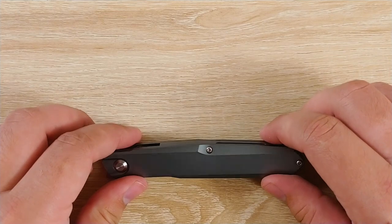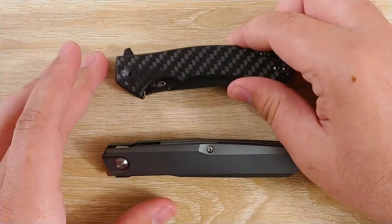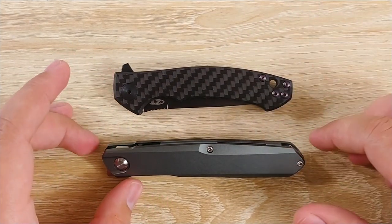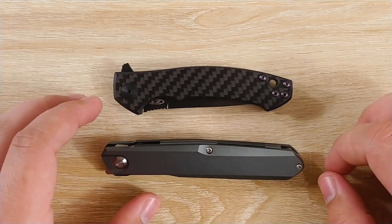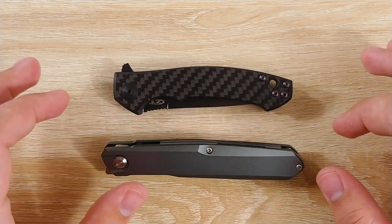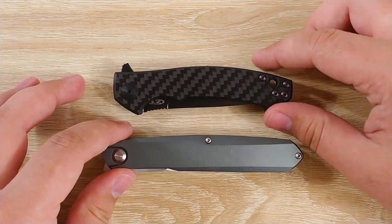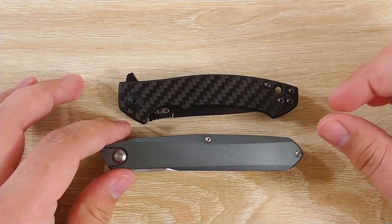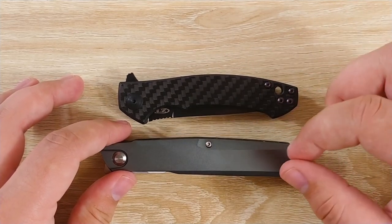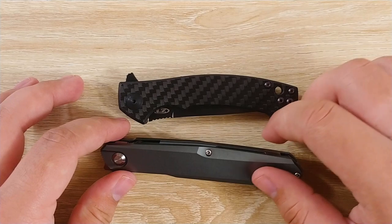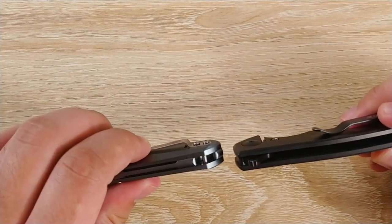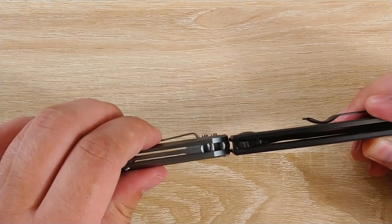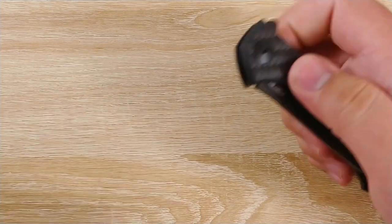For a size comparison, we'll go ahead and bring out the ZT0450. This is probably one of the closer knives I have to it. I'm fairly narrow. This knife is not very wide. It's actually a little bit more narrow than the ZT. It is a little bit longer though, obviously.